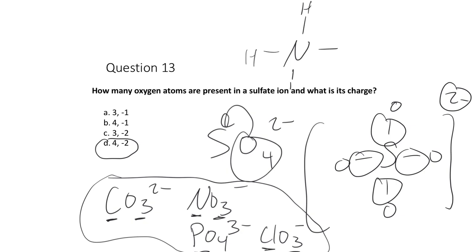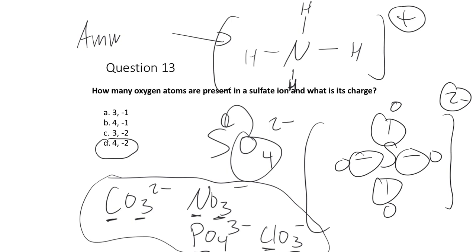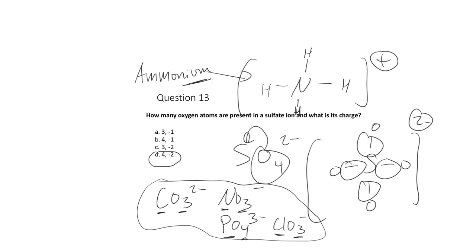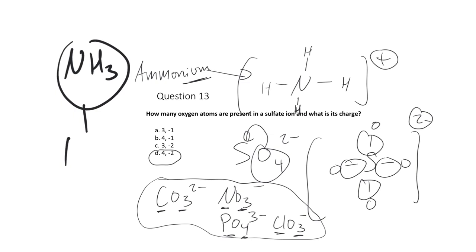Another polyatomic ion with a positive charge is ammonium — NH₄⁺ — four hydrogens connected to a nitrogen with an overall +1 charge. This is a molecular cation. The -ium ending is common for positively charged substances. Ammonia is NH₃ without the charge, which is different from ammonium.